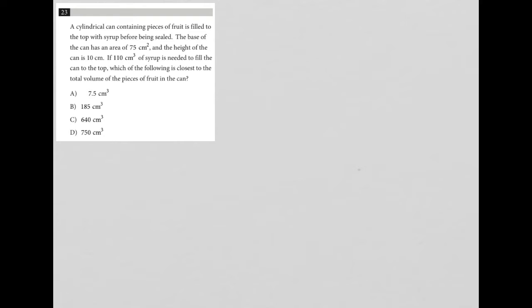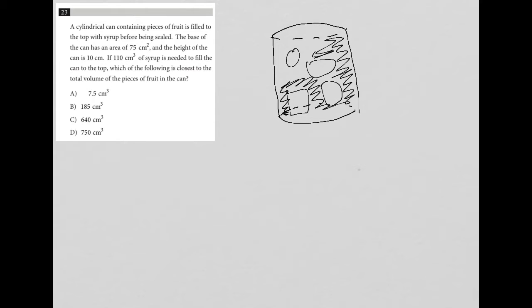This question says a cylindrical can containing pieces of fruit is filled to the top with syrup before being sealed. I'm going to draw this cylindrical can. We know there are pieces of fruit in it, and we fill in the remaining spaces with syrup. That's the strategy - anything that can be drawn, we want to draw it.